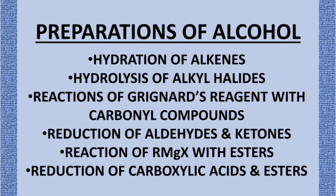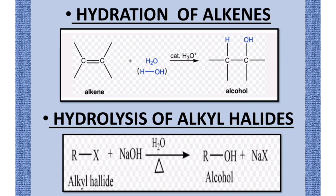In hydration of alkenes, you add H2O to the alkene to get alcohol. In hydrolysis of alkyl halides, alkyl halide RX reacts with NaOH and H2O — this is hydrolysis — and alcohol is produced along with NaX. So from alkyl halides, alcohol is prepared.